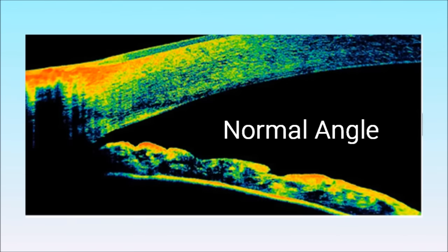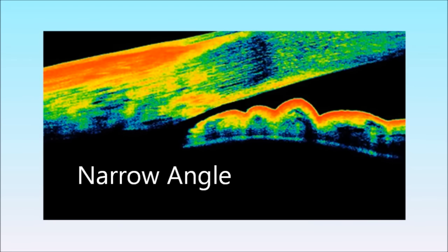The watery fluid inside the eye drains away at a point where the front of the eye or cornea meets the iris or colored part. If the gap between these two structures gets too narrow acute glaucoma results. If spotted early simple laser treatment can prevent the disease.